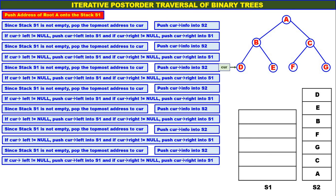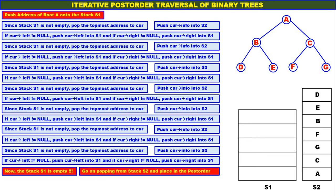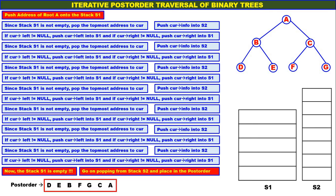Now the stack S1 has become empty. Therefore, go on popping from stack S2 and place it in the post order. Topmost element is D — pop it, place in post order. Next is E — pop it, place in post order. Next is B — pop it. Next is F — pop it. Next is G — pop it. Next is C — pop it. Next is A — pop it and place in post order. So the post order for the given tree is: D, E, B, F, G, C, A.